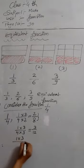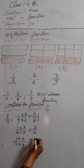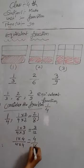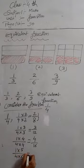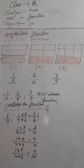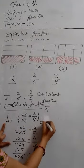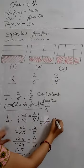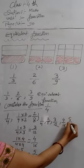Now, one multiplied by four — four ones are four, four fours are sixteen. So we get four by sixteen. Then, one multiplied by five — five ones are five, four fives are twenty. So we get five by twenty. So, the fractions obtained are: one by four, two by eight, three by twelve, four by sixteen, five by twenty. All these are equivalent fractions.